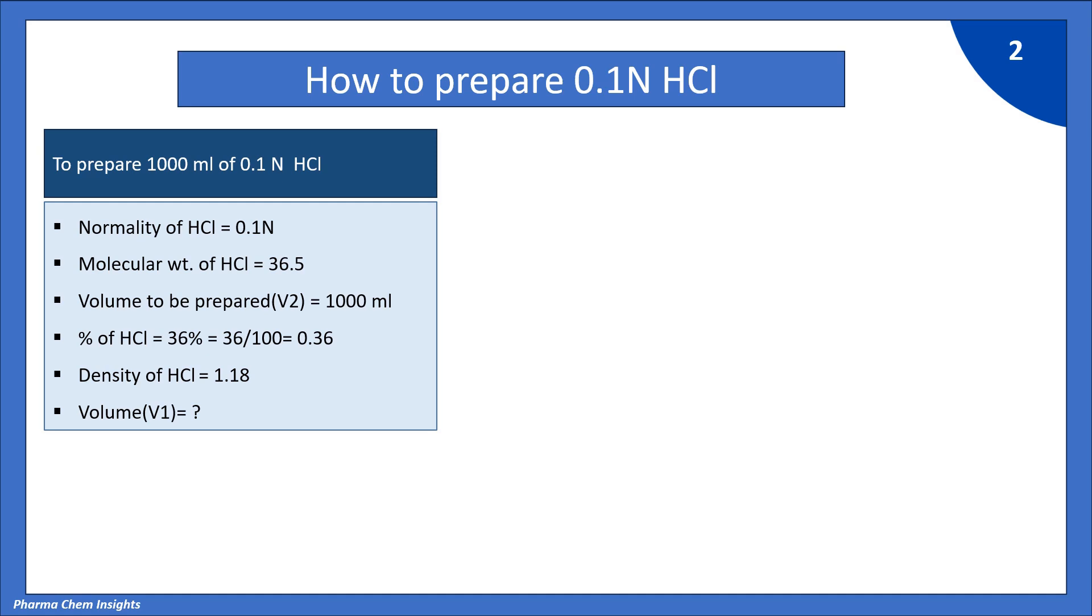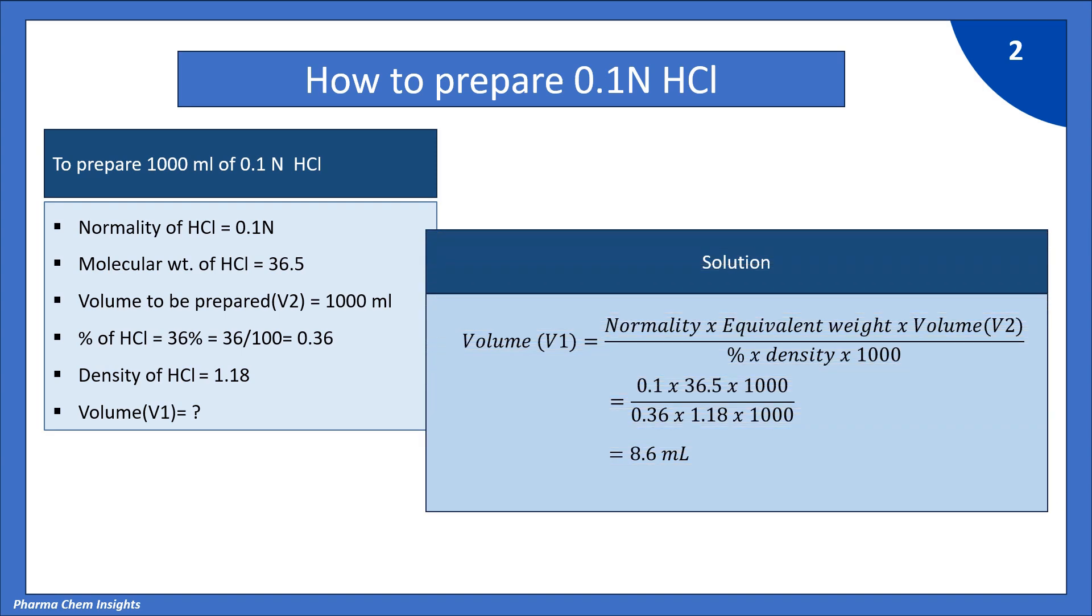Volume V1 we need to calculate. The formula is volume V1 equals normality times equivalent weight times volume V2 divided by percentage times density times 1000. By putting the values: normality 0.1, equivalent weight 36.5 because in case of HCl, molecular weight and equivalent weight are the same as HCl has 1 replaceable H+ ion, times volume V2 that is 1000, divided by 0.36 times 1.18 times 1000. By calculating, we get 8.6 ml.